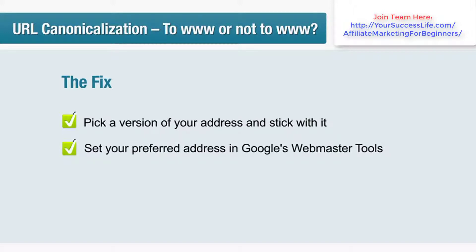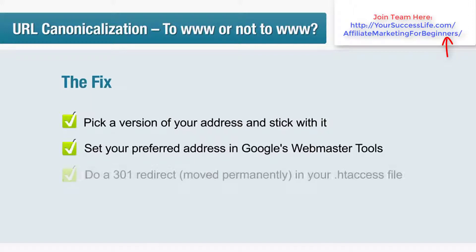Set your preferred address in Google Webmaster Tools. Google lets you designate your preferred address in their Webmaster Tools site. If you haven't signed up for a Webmaster Tools account you should probably do so — there are a few other useful tools in there that will come in handy. Finally, do a 301 redirect (moved permanently) in your .htaccess file.